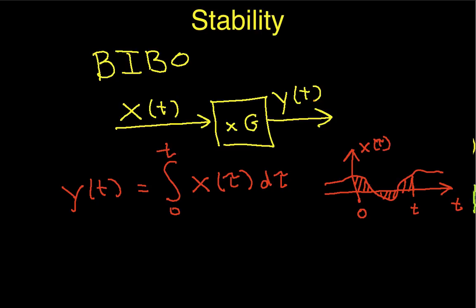At a later time, the output of this system is going to be the area under the input signal at that later time — we could call that t prime. So the output is the area from 0 to t. Is this system bounded input, bounded output stable? It turns out, no.